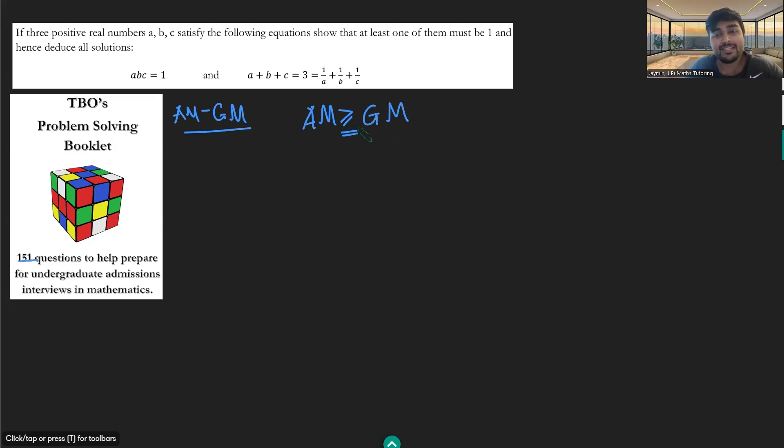So the AM is greater than or equal to the GM for positive numbers, and in fact furthermore we can say that the AM equals the GM, i.e. the equality holds, if and only if those numbers are the same. So what how do we use this here?